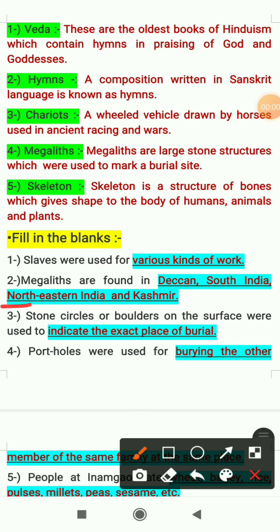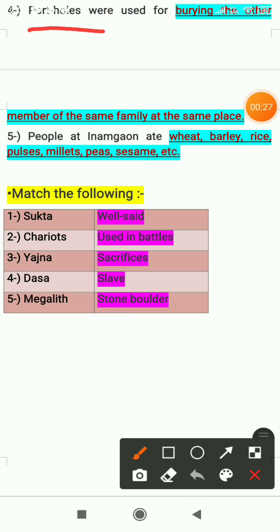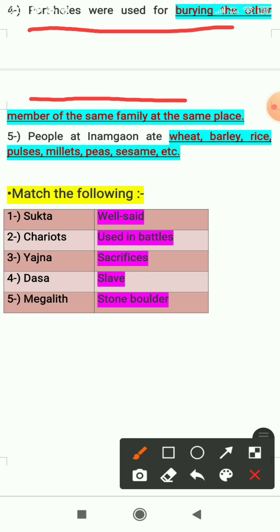The third one: stone circles or boulders on the surface were used to indicate the exact place of burial. The fourth one: pit holes were the holes that were used to bury other members of the same family at the same place.